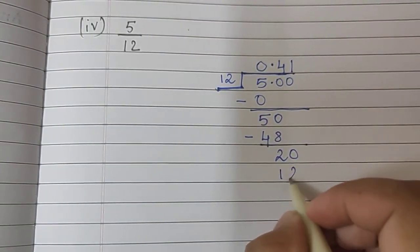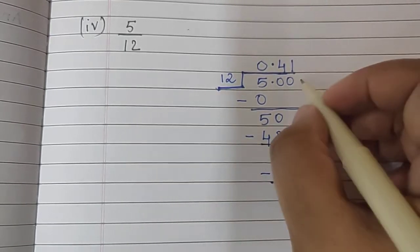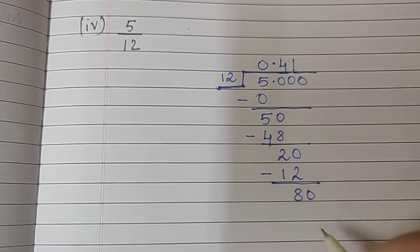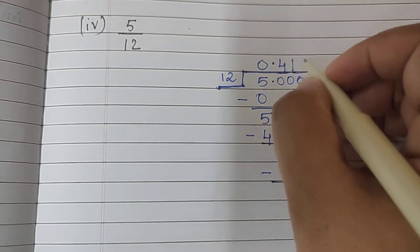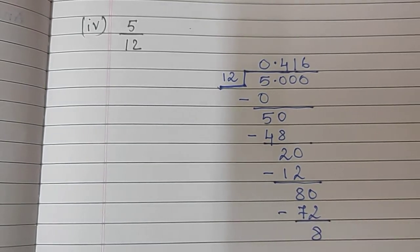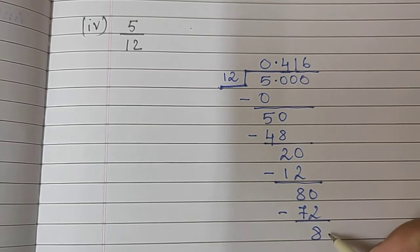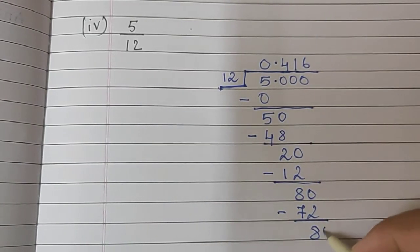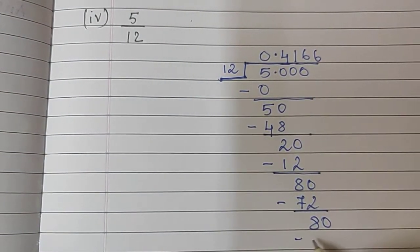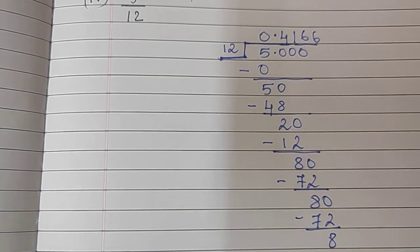12, 1's are 12. So, what remains? 8. We can add as many 0's as we want. So, I will add one more 0 here. 12, 6 are 72. Again, I got 8. If I take more 0 down, this will become 80 again. And again I will get 8. And my answer will keep repeating. So, in such situation, when your last digits keep repeating, you put a line on the number that is repeating.